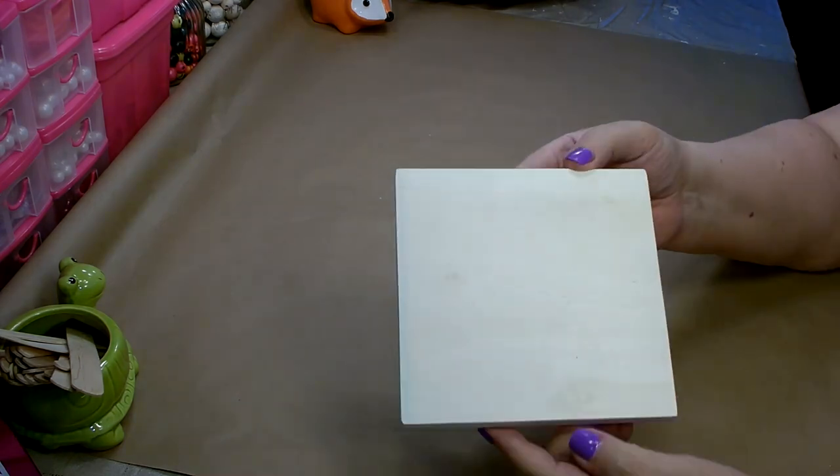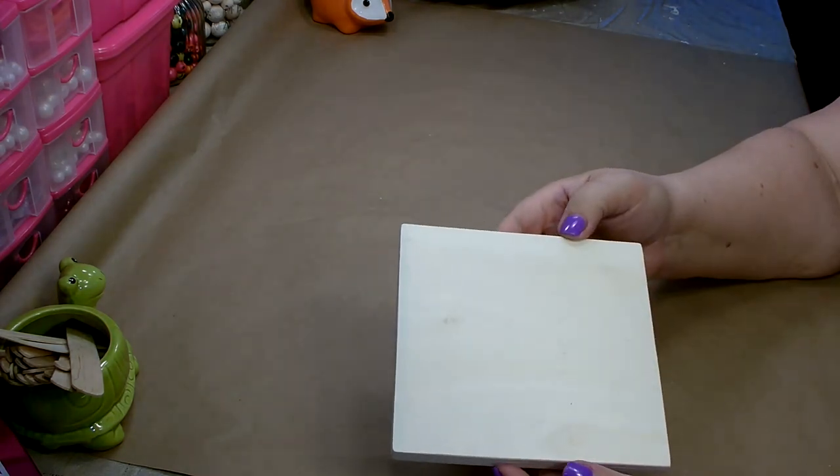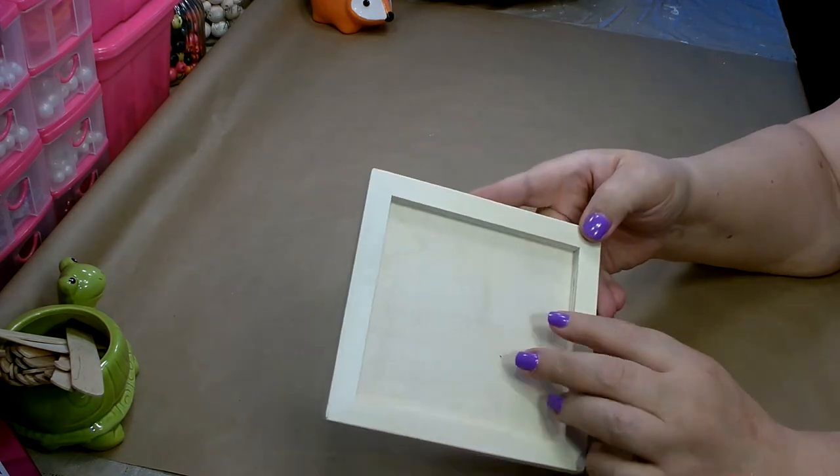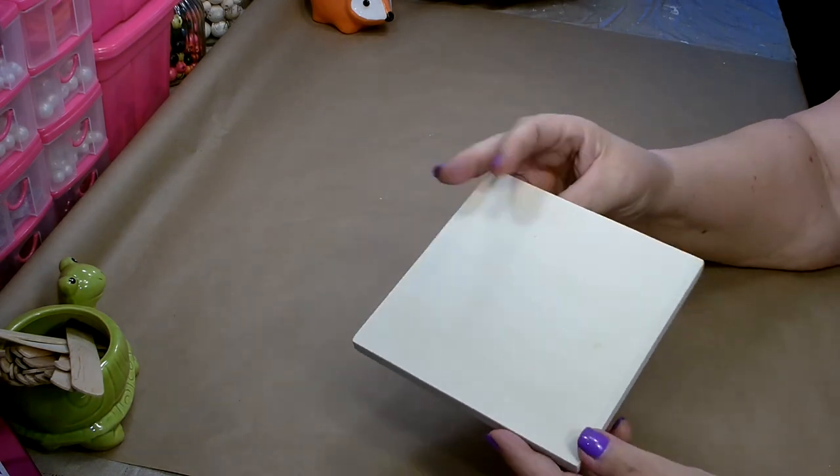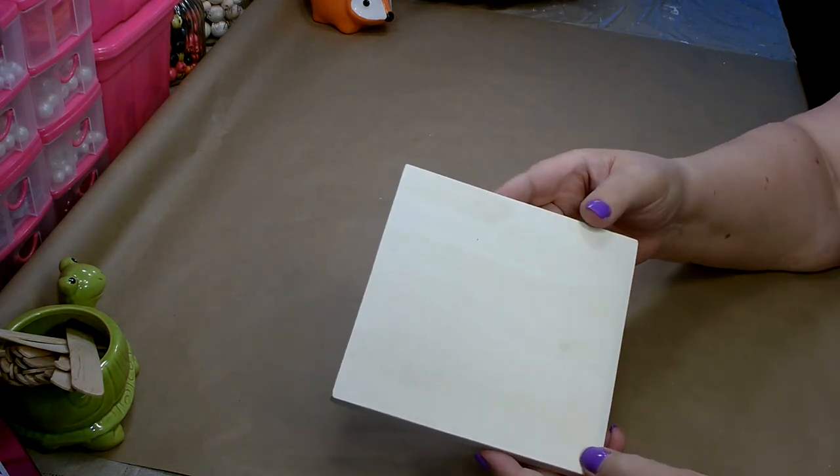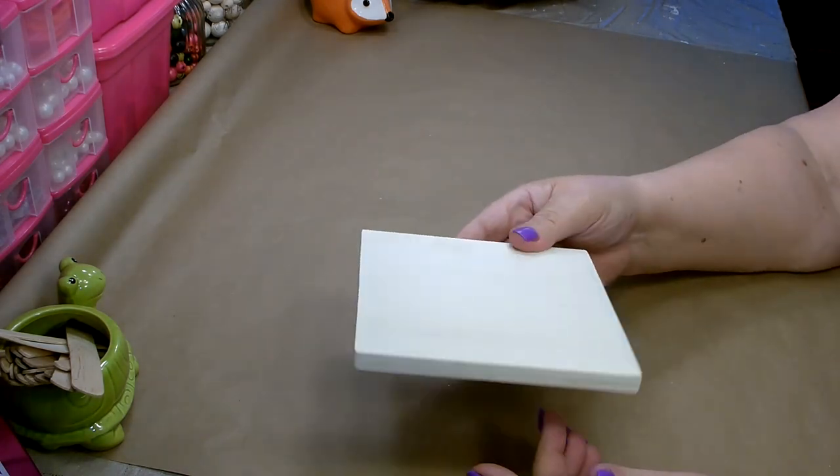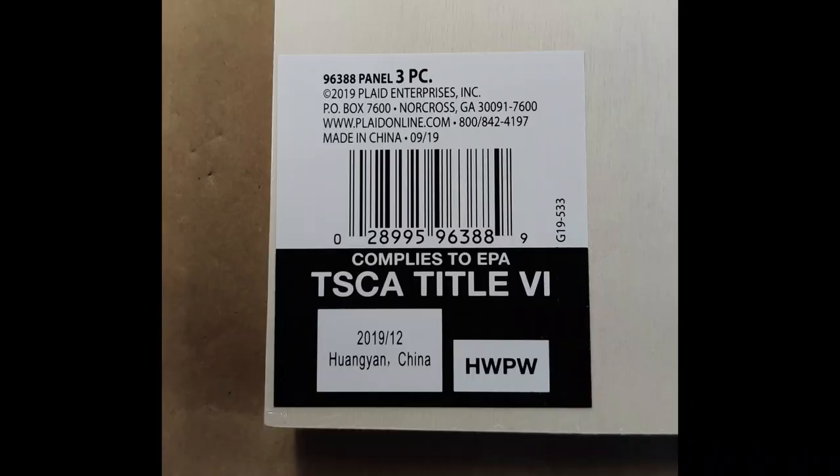Now from Walmart, you're going to need one of these wood panels. They come in a package of three and this one is a six by six. They cost four dollars and ninety-seven cents for a package of three. And here is the skew number for these.